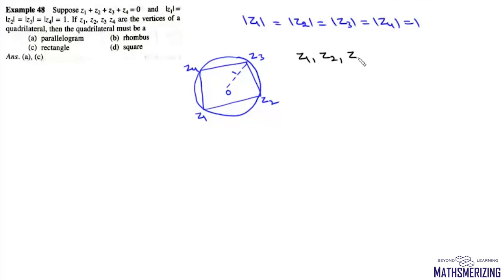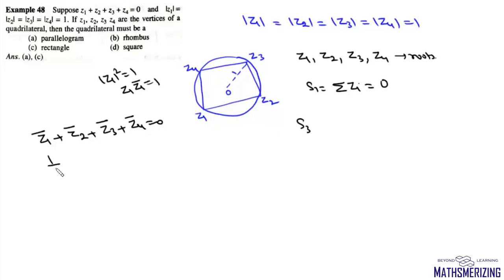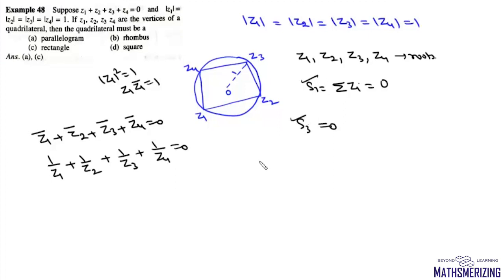Suppose z1, z2, z3, z4 are roots of some bi-quadratic equation. The sum of all roots s1 equals z1 plus z2 plus z3 plus z4, which is zero. Since z1 plus z2 plus z3 plus z4 equals zero, the sum of their conjugates is also zero. Because mod z equals 1, z bar equals 1 upon z, so 1 upon z1 plus 1 upon z2 plus 1 upon z3 plus 1 upon z4 equals zero, meaning s3 is also zero.